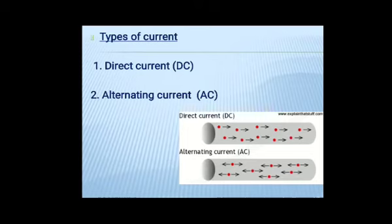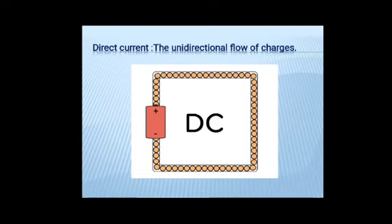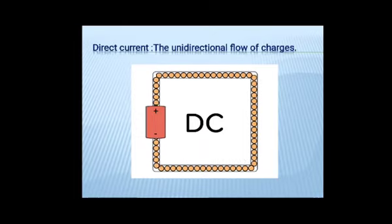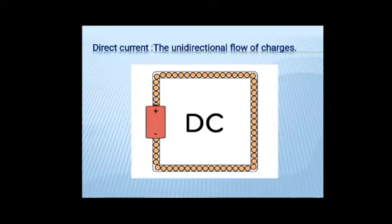There are two types of current. One is direct current, DC. Second one is alternating current, AC. What is direct current? The unidirectional flow of charges is called direct current. Means, charges does not change the direction with respect to time. You are observing in the slide, charges are moving in only one direction continuously. So, this is DC.